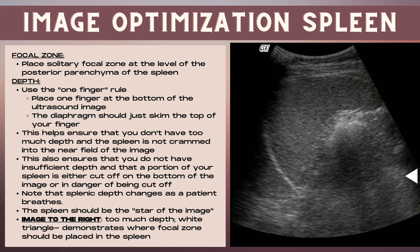In the image to the right, the white triangle represents the level where the focus should be placed. When optimizing depth for the spleen, ensure the spleen is the star of the image. Use the one-finger rule: place one finger at the bottom of your ultrasound image — the diaphragm below the spleen should just skim the top of your finger. This ensures you don't have too much depth and that the spleen is not crammed into the near field, nor is it cut off at the bottom.